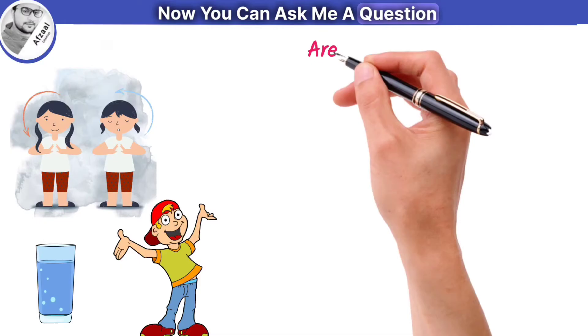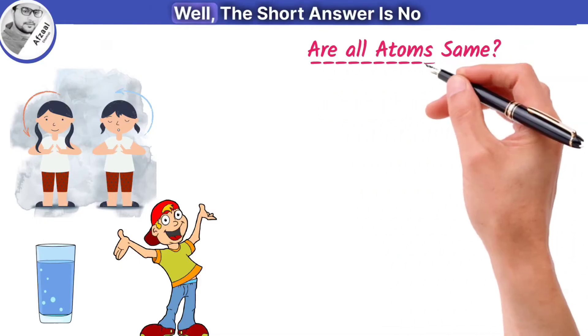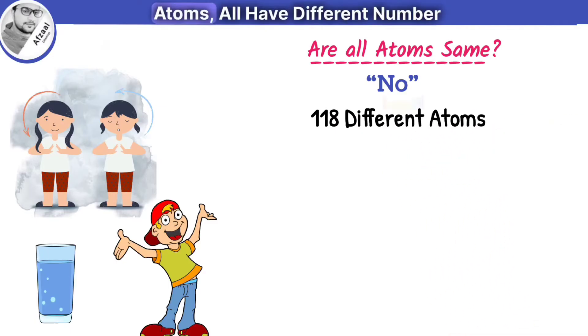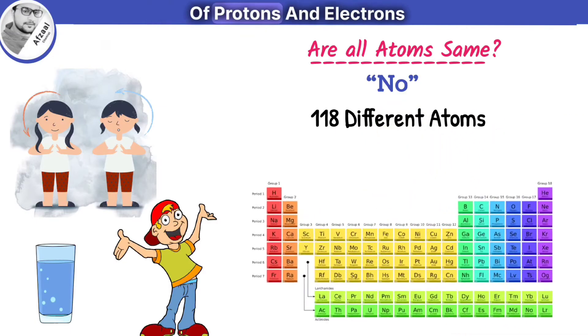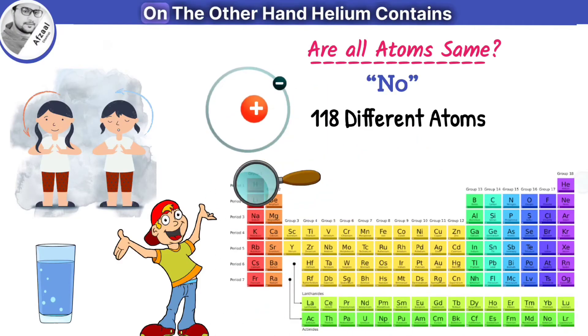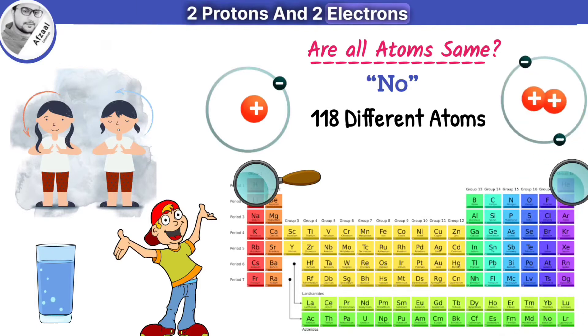Now you can ask me a question: are all atoms the same? Well, the short answer is no. There are 118 different types of atoms, all have different numbers of protons and electrons. Like a hydrogen atom contains one proton and one electron. On the other hand, helium contains two protons and two electrons.